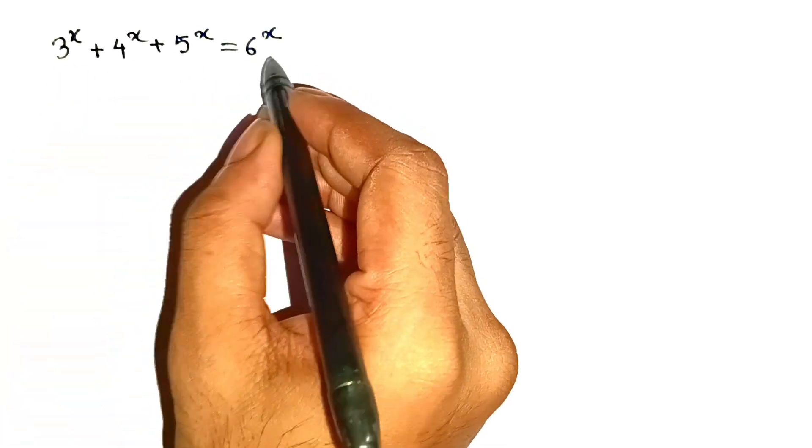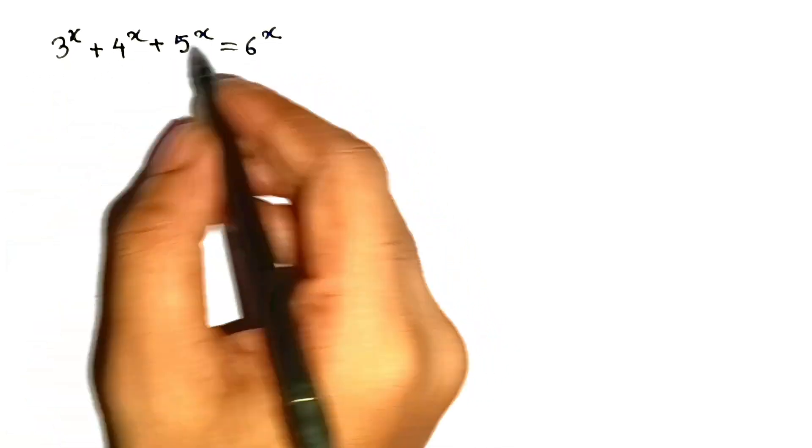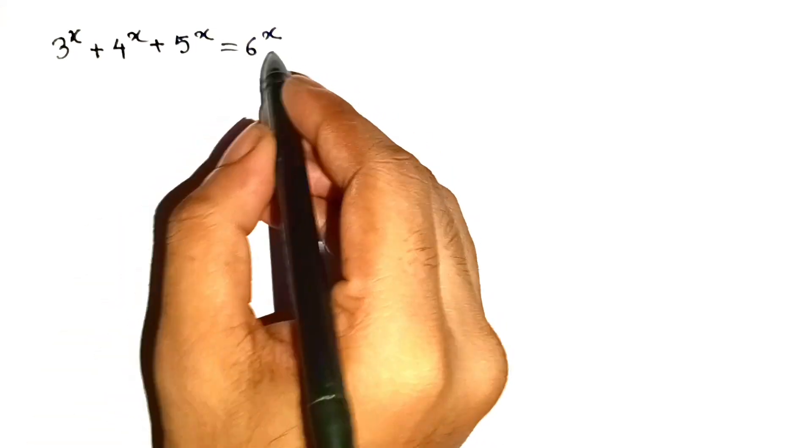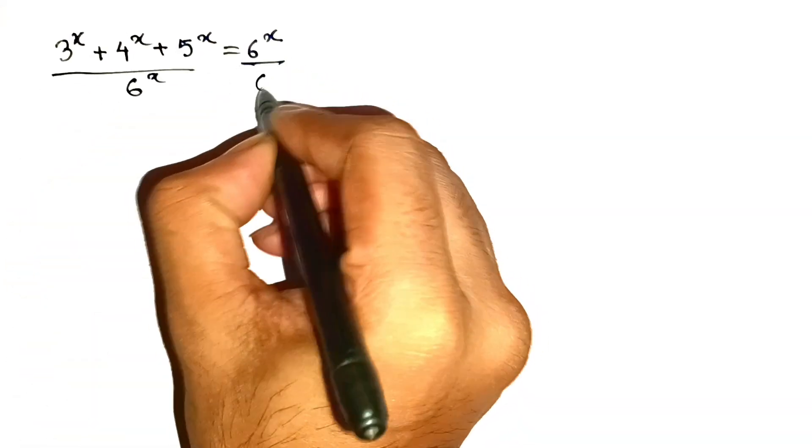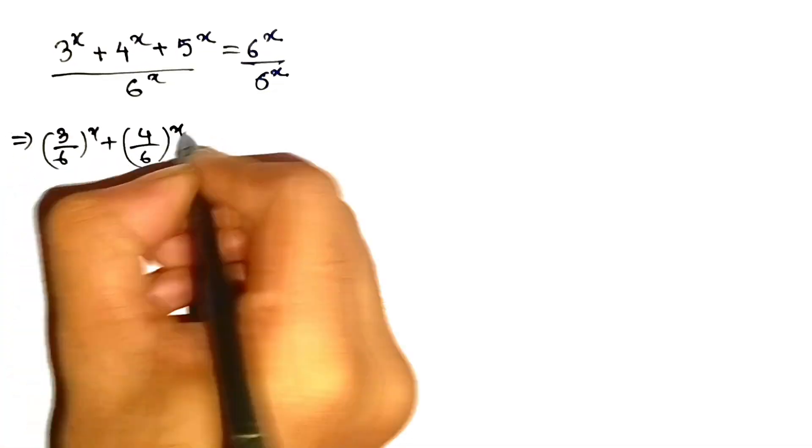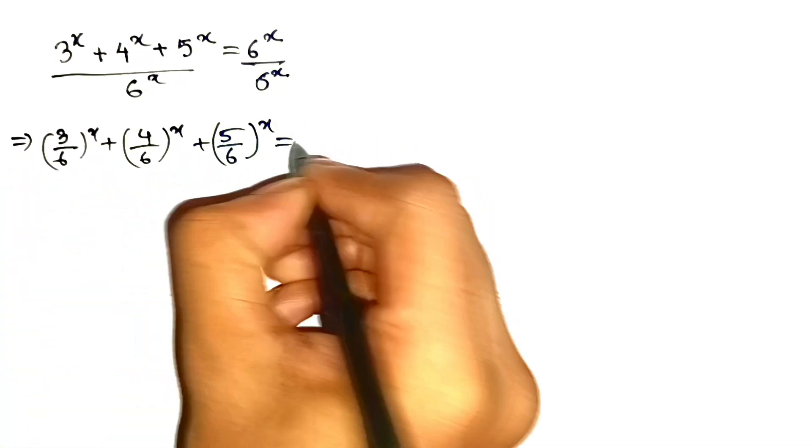We divide everything by the biggest power term. And what's the boss on the right? 6 to the power of x. So we divide both sides by 6 to the power of x. And now it looks like this.